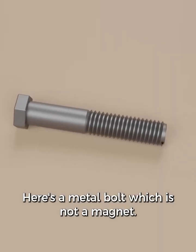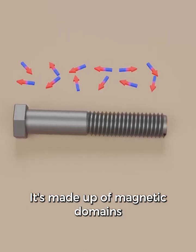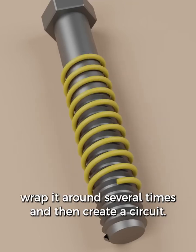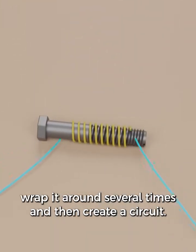Here's a metal bolt, which is not a magnet. It's made up of magnetic domains, but they are pointing in random directions. Now let's take a wire, wrap it around several times, and then create a circuit.